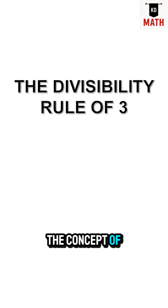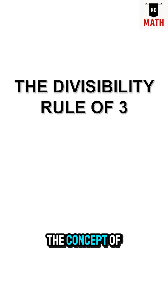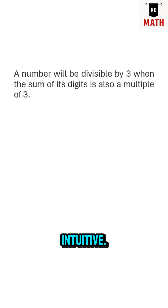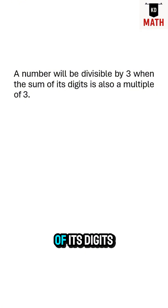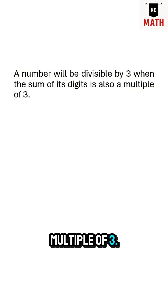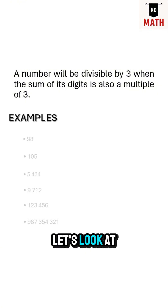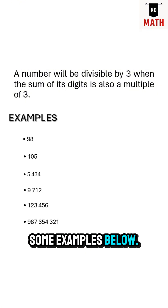Well, unlike the concept of divisibility by 2, the concept of divisibility by 3 is not as intuitive. We say that a number will be divisible by 3 when the sum of its digits is also a multiple of 3. Let's look at some examples below.